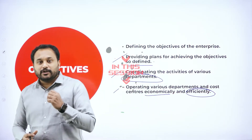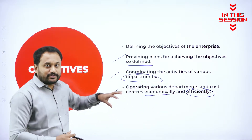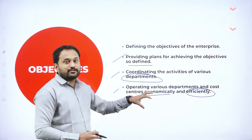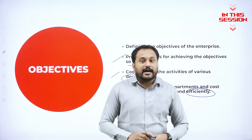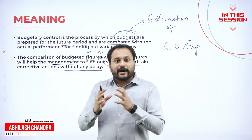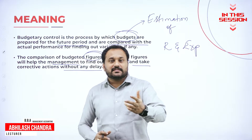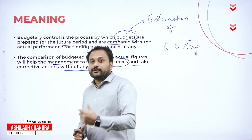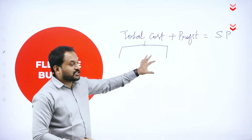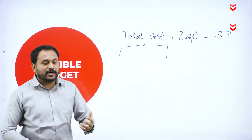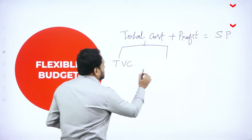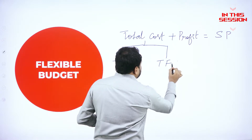Each and every department will know how much they are supposed to go with it, so it's a regular checkup for the department so that they get to know what they are up to. We need to see what the estimated revenues are, what exactly your expenses are, and what can be the future so that we can take decisions. This is called budgetary control. Total cost is divided into two types: total variable cost and total fixed cost.